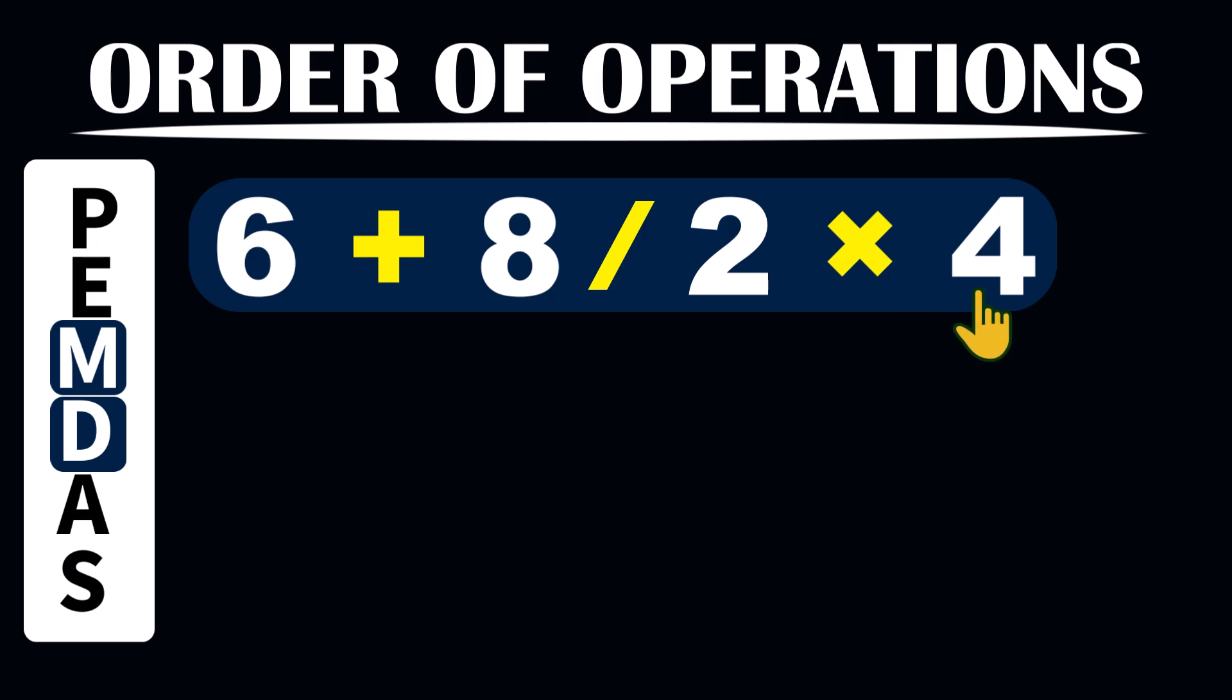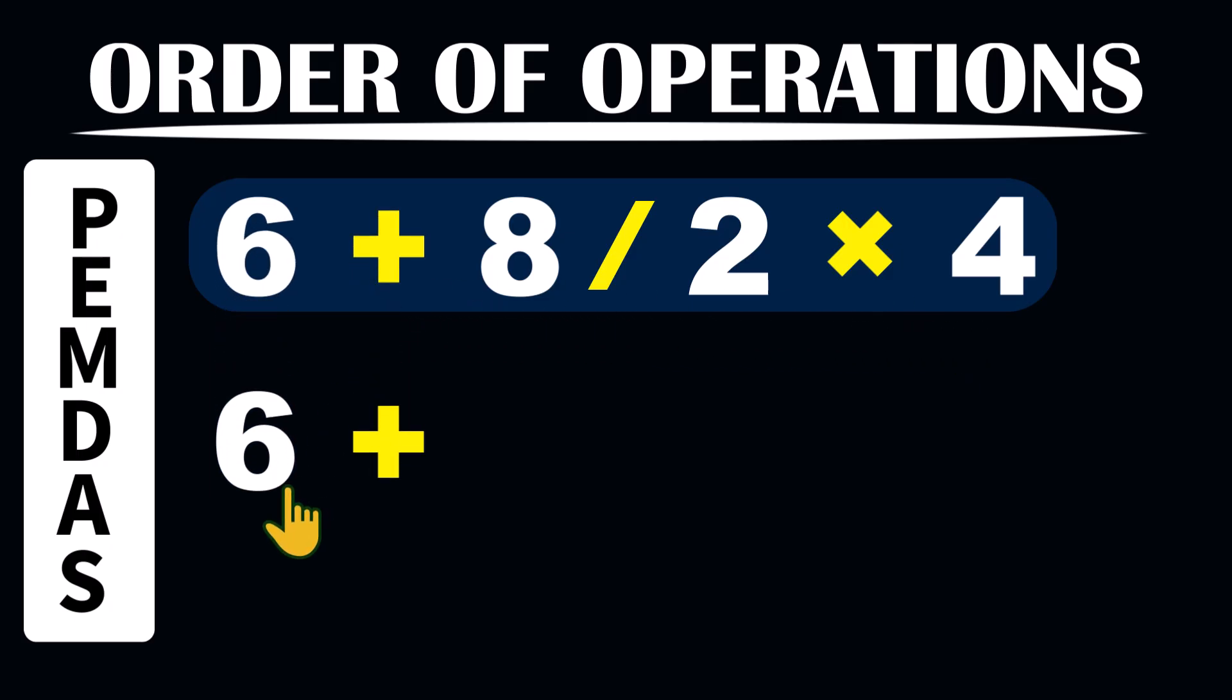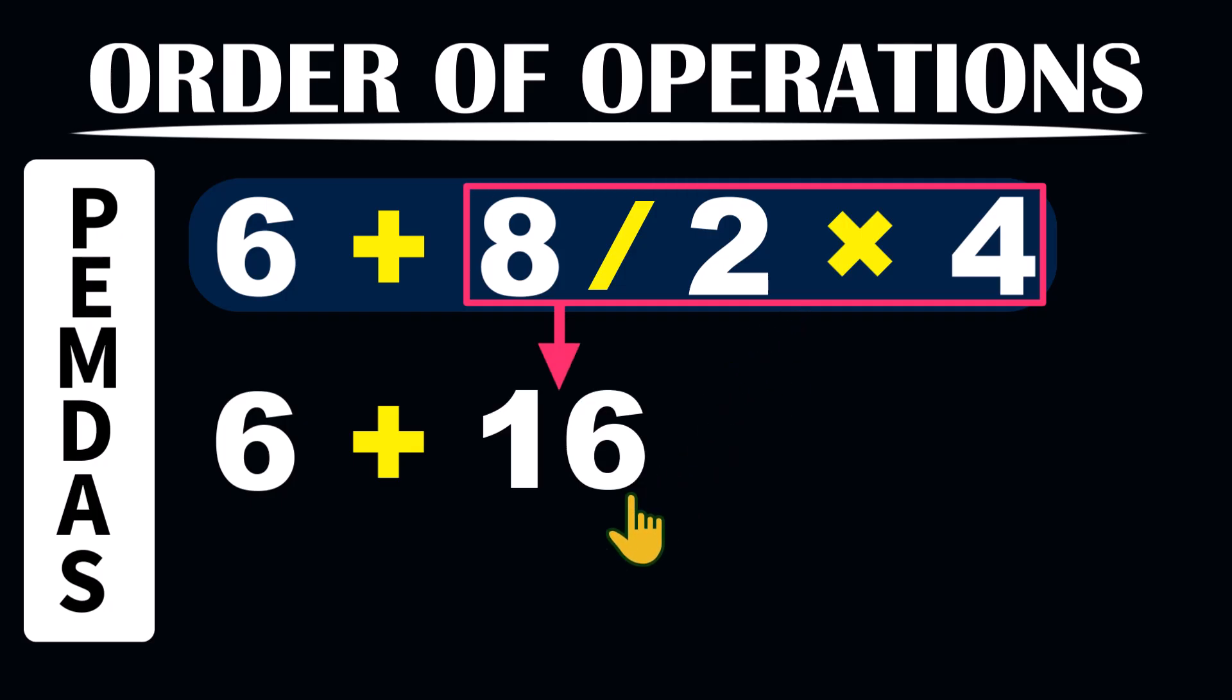The last two operations in the PEMDAS order are addition and subtraction. Similarly, between the two, whichever comes more to the left is calculated first. In our example here, we don't have subtraction, but we have addition. So, all we have to do now is add 6 to the result of the other operations, which was 16. And that gives us the correct final result, 22.